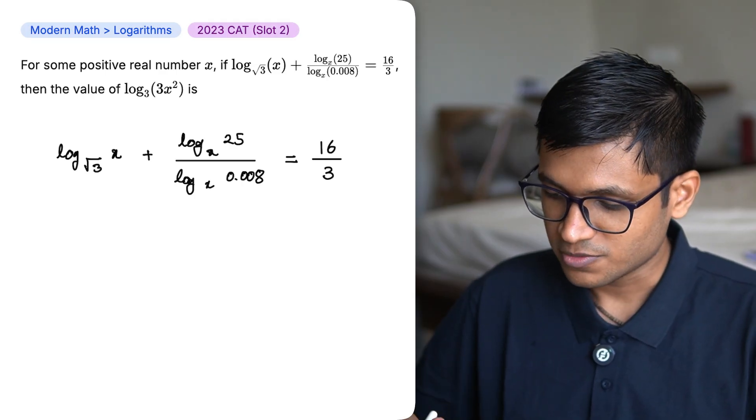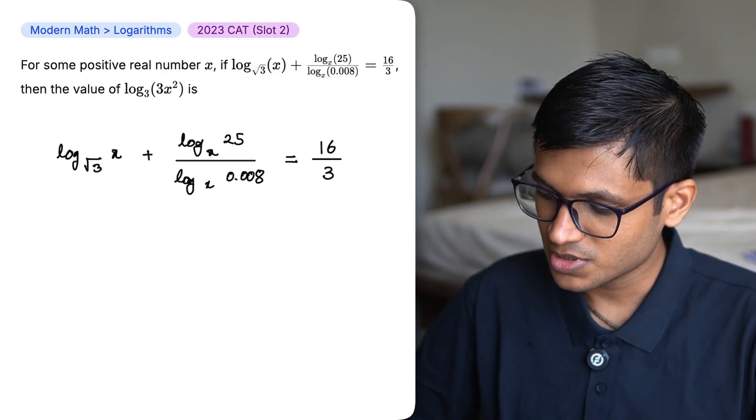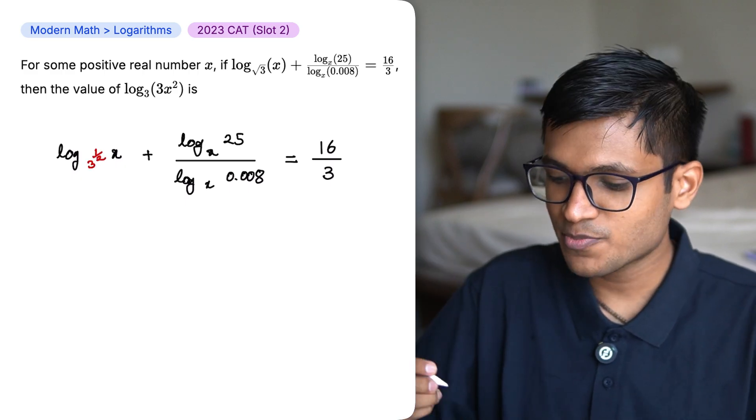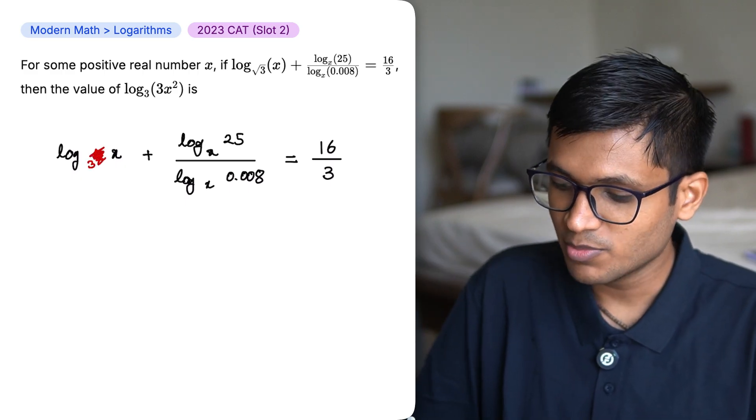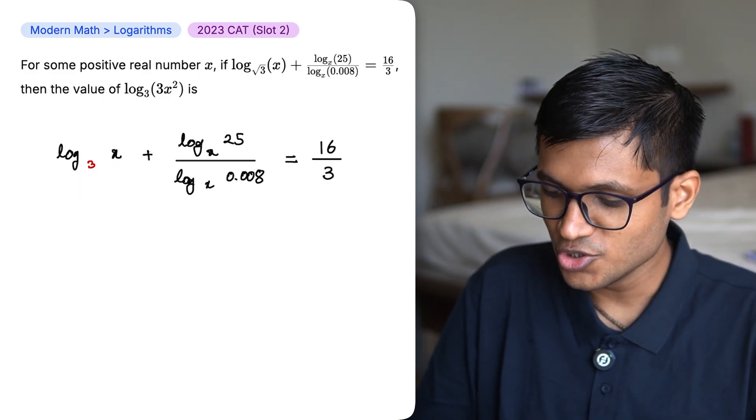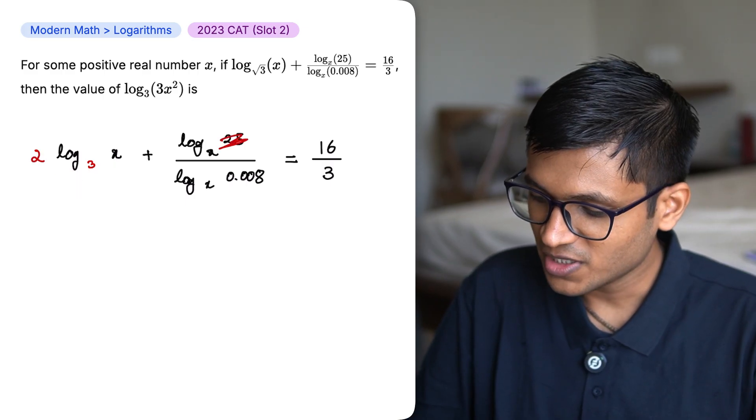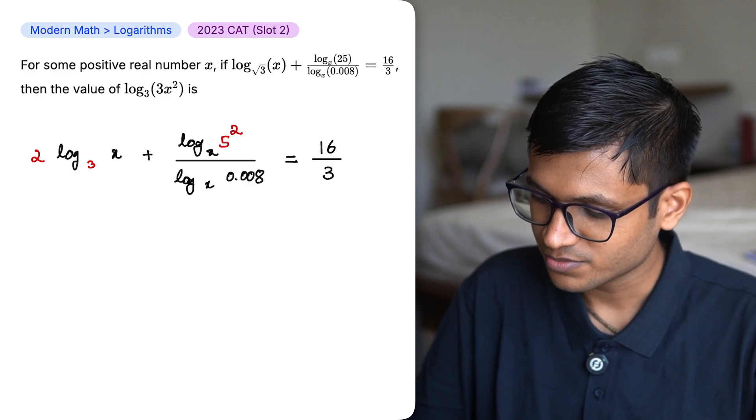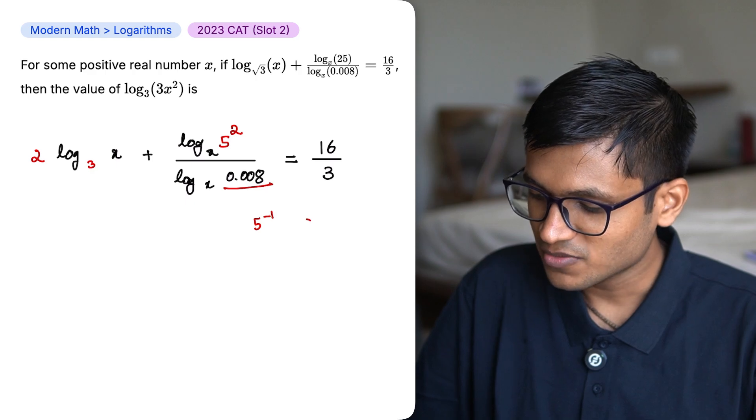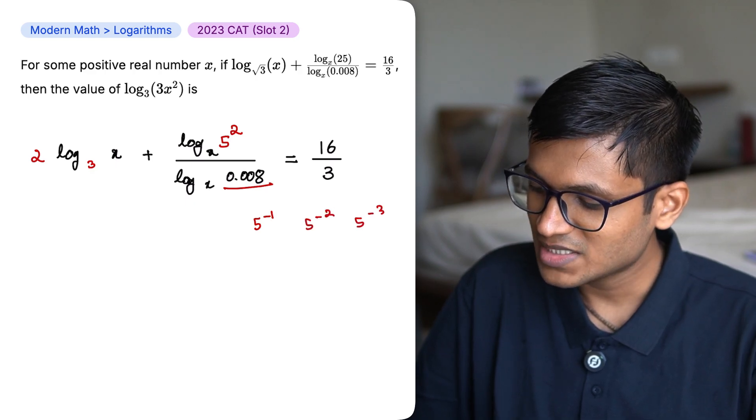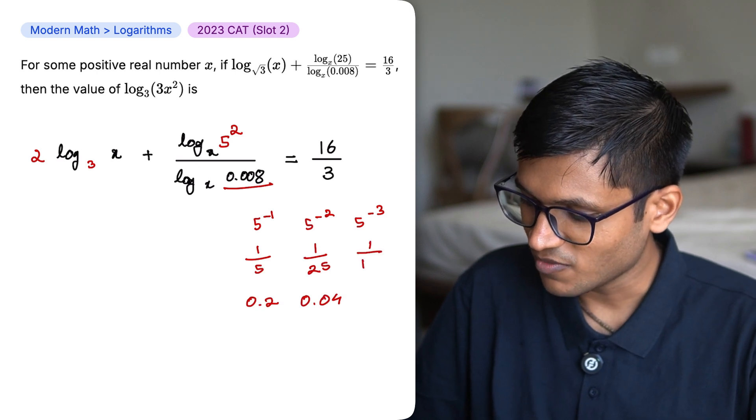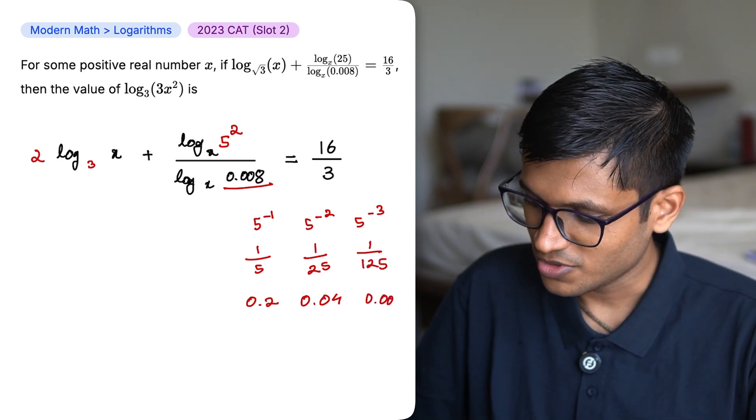Log x base root 3 plus this thing is equal to 16 by 3. Square root of 3 can be written as 3 to the power half. Any exponent on a base can be brought to the denominator. The fraction in the denominator will be a reciprocal in the numerator. Now 25 is nothing but 5 to the power 2 and we have decimals over here. It probably might be 5 to the power minus 1, 5 to the power minus 2, 5 to the power minus 3 and just put this in the calculator and check. 5 to the power minus 3 is 1 by 125 which then becomes 0.008.